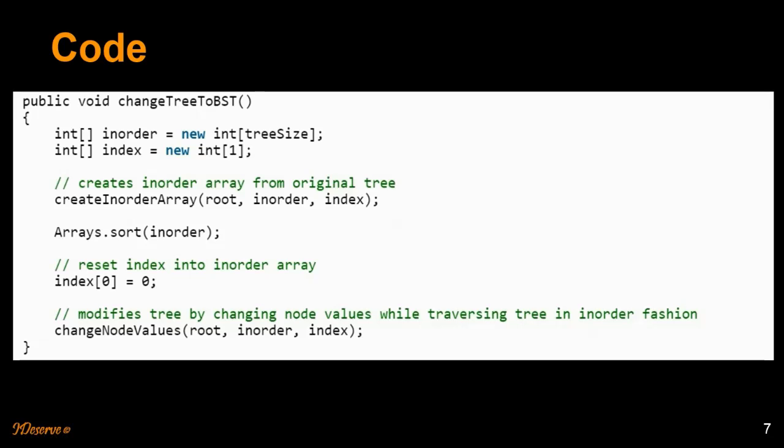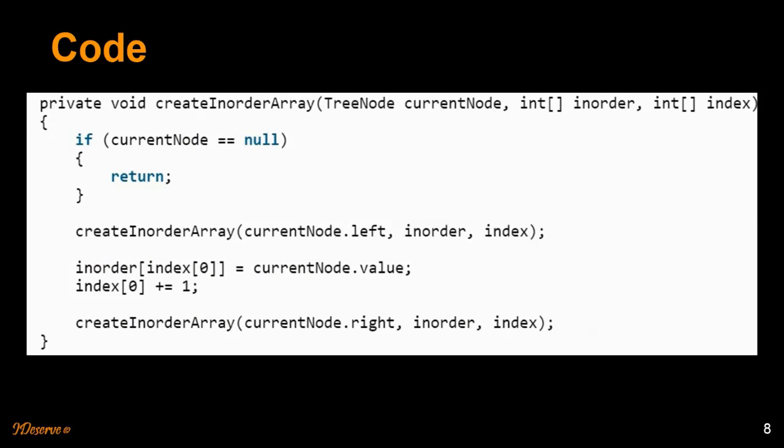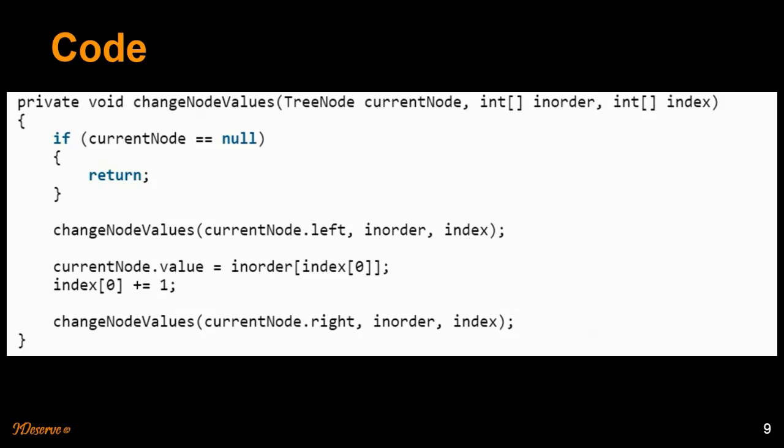Let's look at how we create this inorder array. The code is pretty simple — it's just the way the pseudocode looks. First we traverse the left subtree, we populate the inorder array, and then we traverse the right subtree. After sorting — I have not included the sorting step because we are using one of the collections methods from Java — we just have the third step here, which is basically changing the node values of the binary tree. At the point where we have traversed the whole left subtree, we are replacing the node values with the corresponding values in the inorder array, and then we traverse the right subtree.